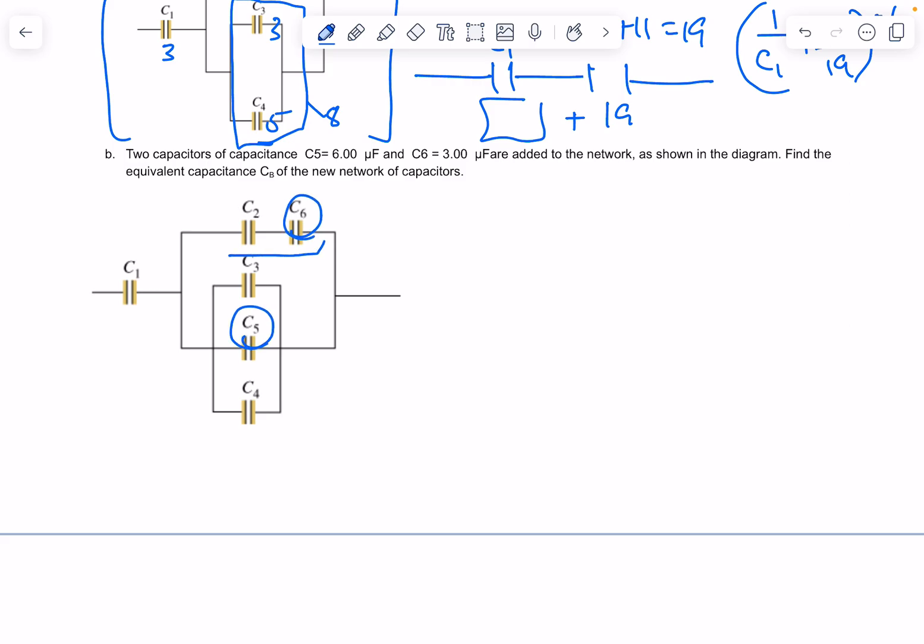Now warning, what I would do is I would add these two first. It'd be 1 over C2 plus 1 over C6 to negative 1. So I could convert this into just an individual capacitor.